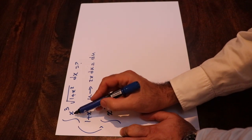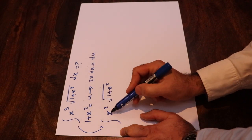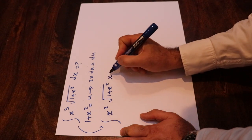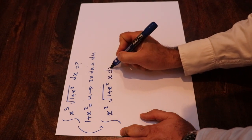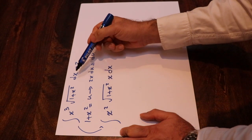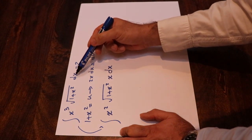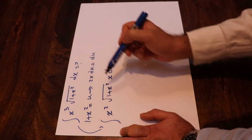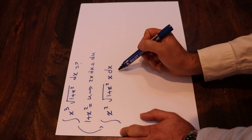And remember there is one x still missing here, so I write it here: x dx. All I did here is I just rewrote this integral like this one.